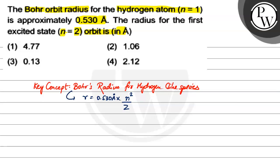So the first time we have n equal to 1, so clearly 0.530 angstrom and z is already 1. But for the first excited state, it is 0.530 angstrom times n squared, which is 2 squared, divided by 1. So this will be 4 times 0.530, which equals 2.12 angstrom.